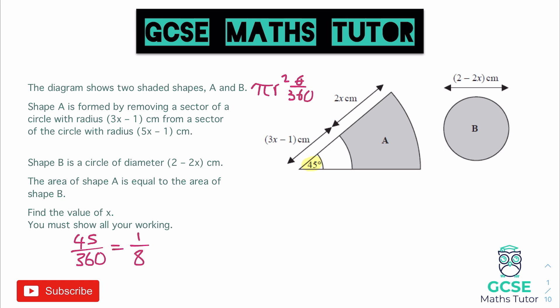When finding the shaded section, we find the area of the larger sector and take away the area of the smaller sector. For the larger circle, we have pi multiplied by the radius squared, where the radius is 5x minus 1, so we square that. Then we subtract pi times the radius of the inner part, which is 3x minus 1, squared. We'll incorporate the 1 eighth once we've got the combined expression.